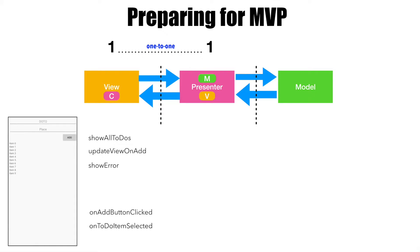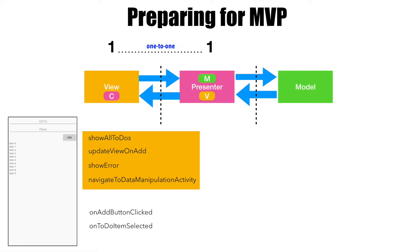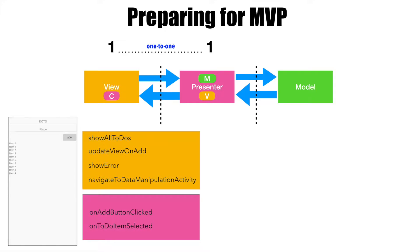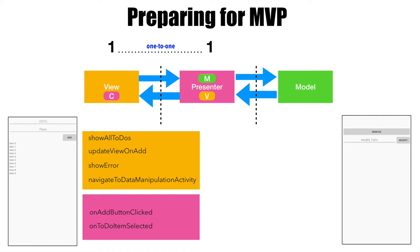On to-do item selected, you want to navigate to a data manipulation activity which is another screen. So, the four methods that you see on the top basically belong to the view and actions that we are doing on this particular screen belong to the presenter. The same concept applies to the data manipulation activity. When you navigate to this particular activity, initially you want to show which particular to-do item you selected to either remove or modify, so you want to initially show the selected to-do. And then, when you click on the remove button,